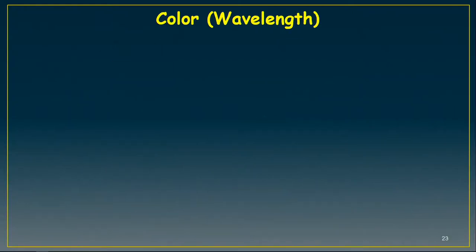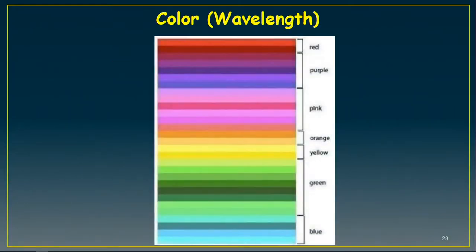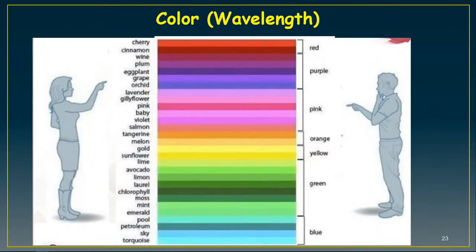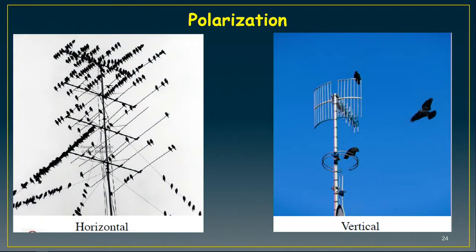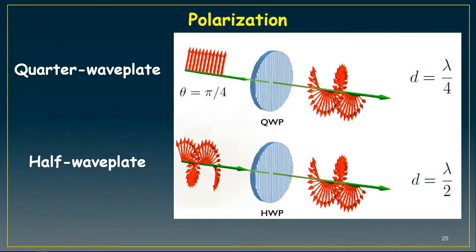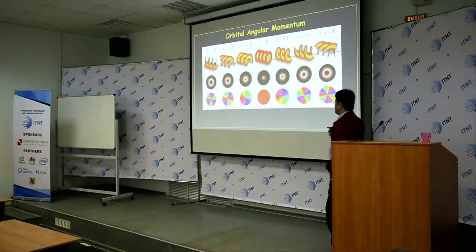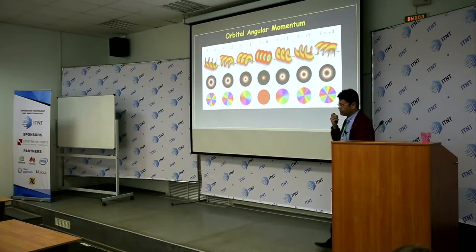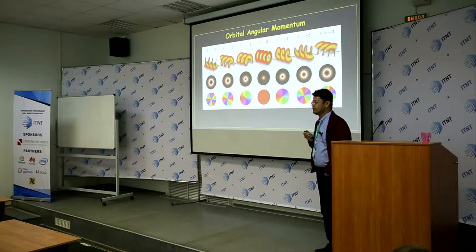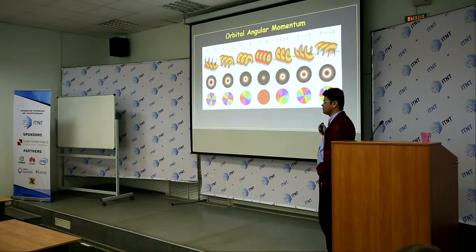So this is color — the first degree of freedom — then polarization: horizontal and vertical. There are some devices which we can use to change the polarization: quarter wave plate, half wave plate. And also angular momentum — this is very important because I talked about the Nobel Prize of 2018 by Arthur Ashkin.